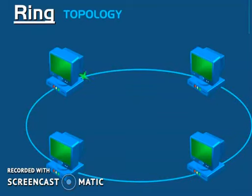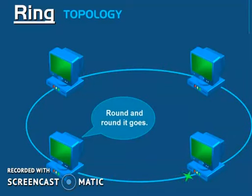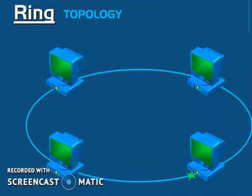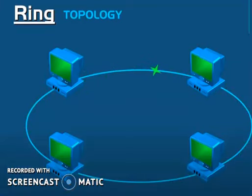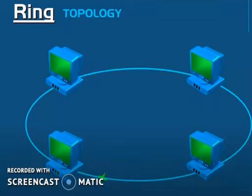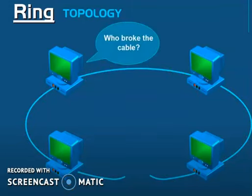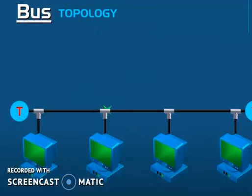The second topology is ring topology. As you can see in the figure, devices are connected in a round or circular form and data travels from one system to another. Ring topology can be easy to install, but nowadays it is rarely used. Its disadvantage is that if one system goes down or a cable breaks, the whole network comes down, making it not very reliable.